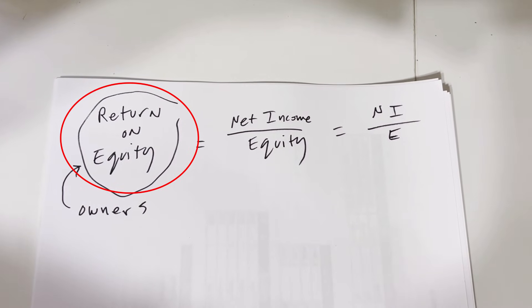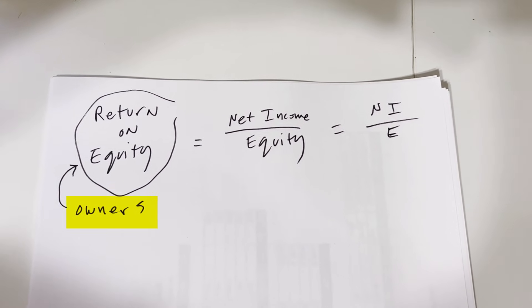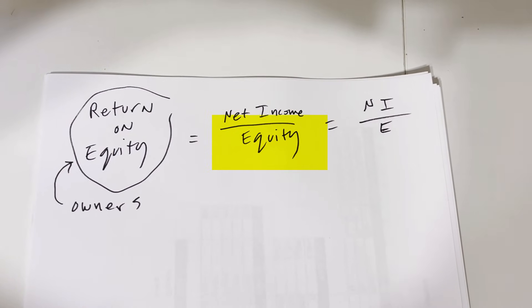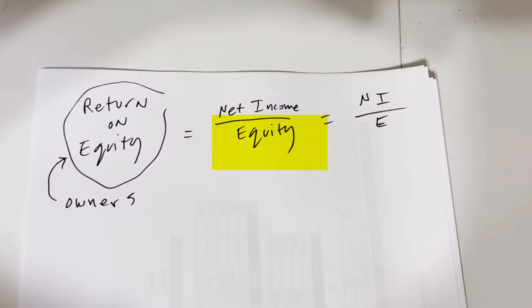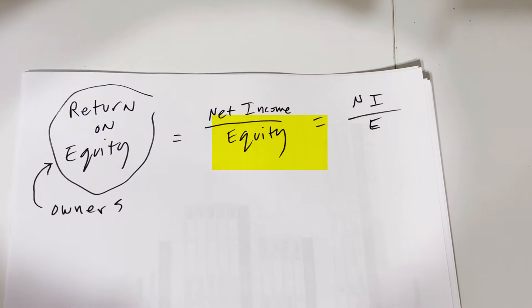Return on equity. That's the return to the owners. It equals net income divided by equity, which is total stockholder equity.